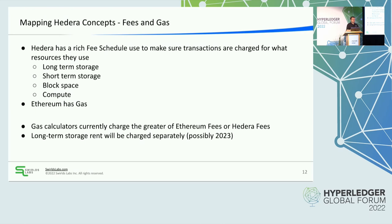One thing that's changing is we're separating the charge for long-term rent from writing the value for the first time. We're introducing the notion of state rent into the Hedera network, but charging it separately outside the EVM. This is something probably shipping in 2023 — some bits are already leaking into the code but the decision hasn't been made to flip the switch yet. It's going to have a positive effect on EVM integrations because gas calculations will be more stable and reflect more accurately what's really happening.